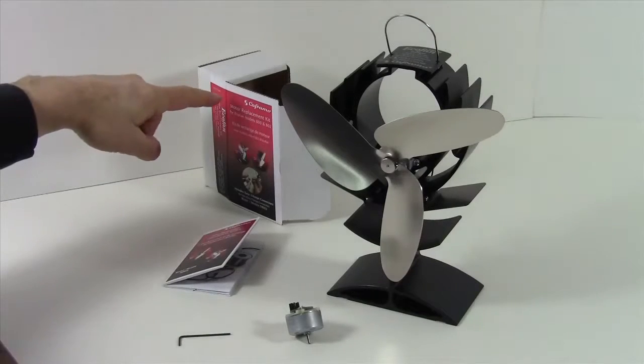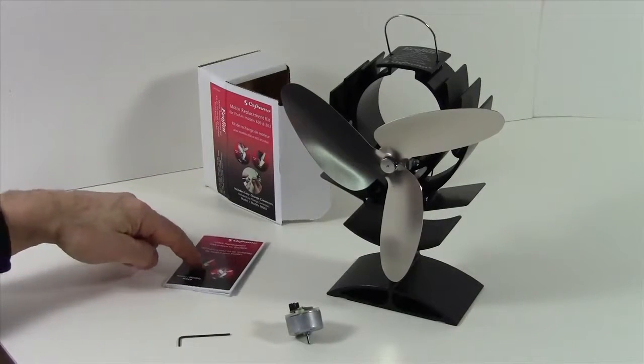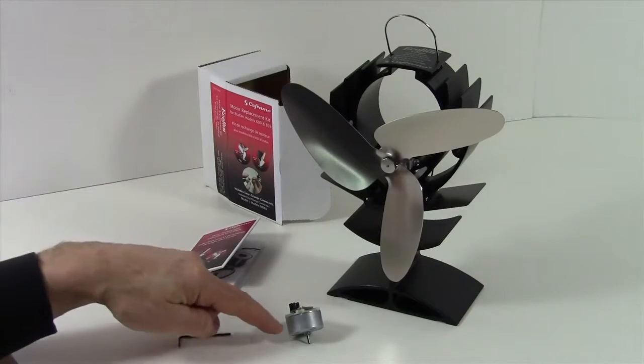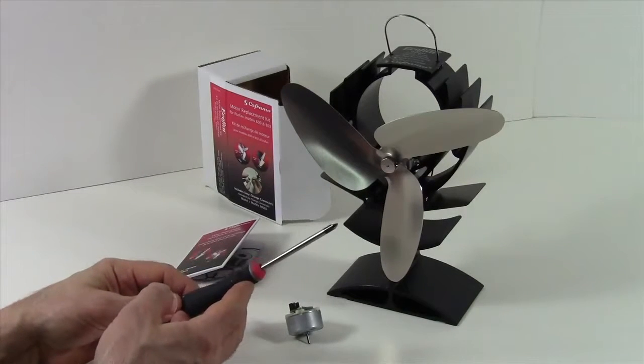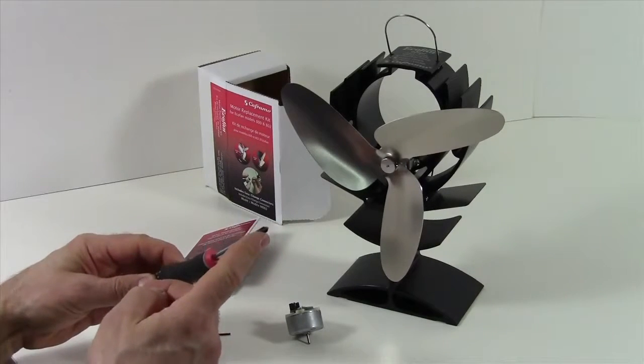Now in your ecofan replacement kit you will receive an instruction manual, an allen key, and a brand new motor. The only other piece of equipment we're going to need for this procedure is a Phillips screwdriver. The head of a Phillips screwdriver looks like this.